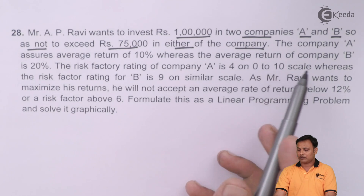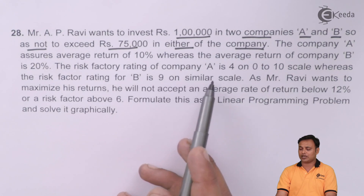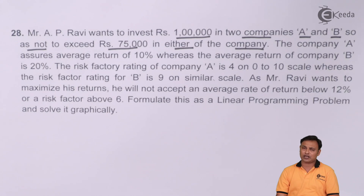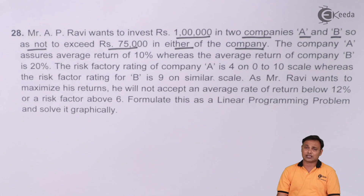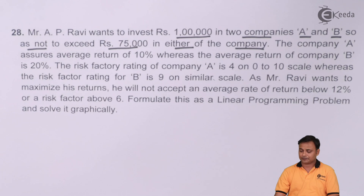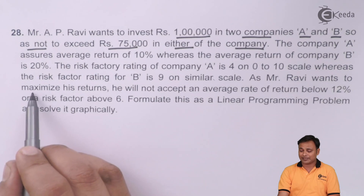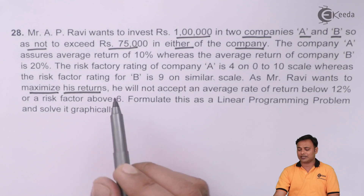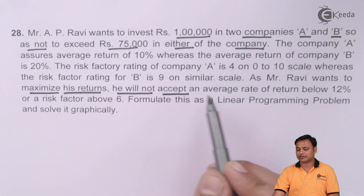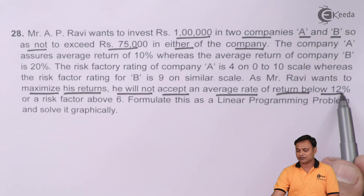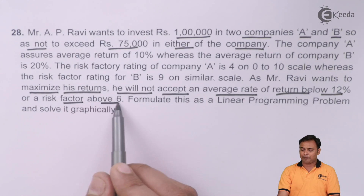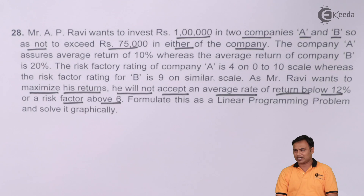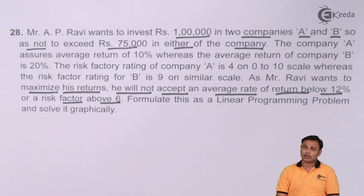The risk factor rating is on a scale of 0 to 10. Company B has higher returns, so its risk is also higher; company A has lower returns, so its risk is lower. Mr. Ravi wants to maximize his returns, but he is not willing to accept an average rate of return below 12 percent and a risk factor above 6.